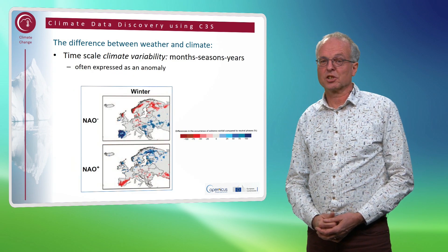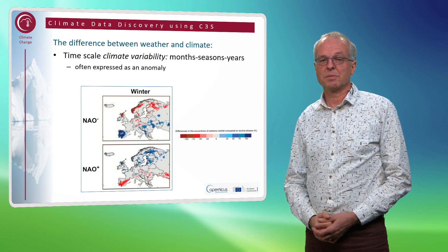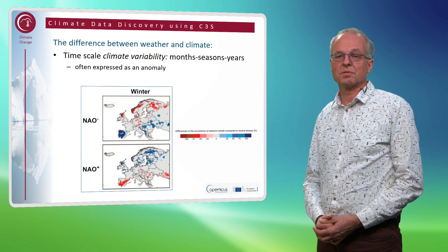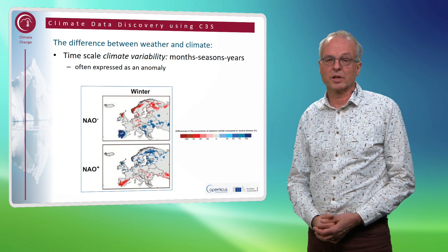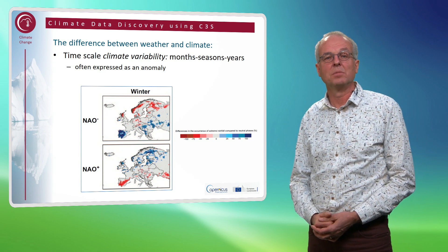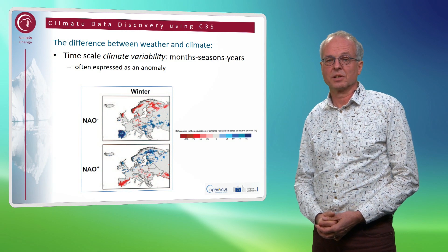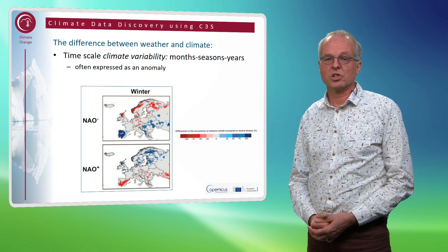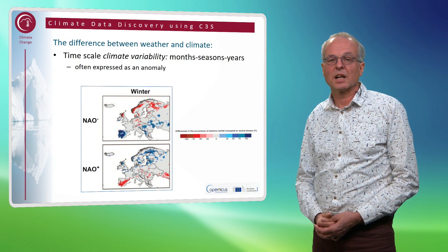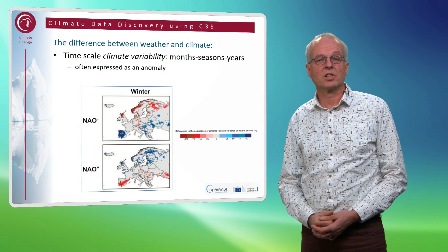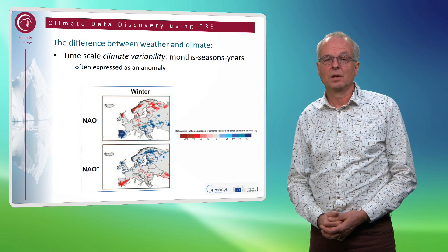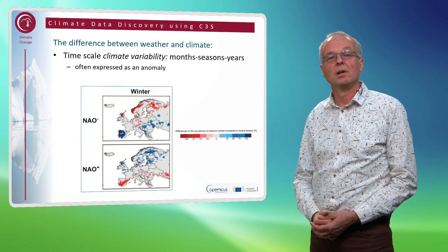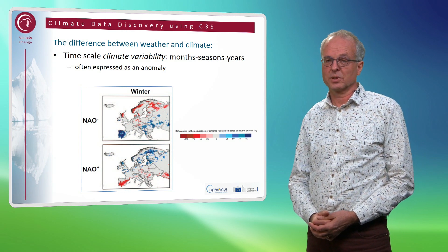Finally, there is something in between: climate variability. Climate variability is often related to well-known phenomena like El Niño, or perhaps more relevant for the European area, the North Atlantic Oscillation. The timescale of climate variability is between months and seasons up to years. Climate variability is often expressed as an anomaly — the difference between a particular season in a particular year and the climatological average for that season.